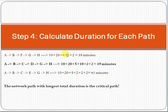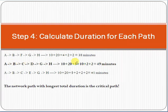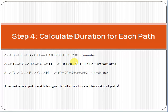Now look at these three paths and find the longest duration. You can see that 49 minutes is the highest. That means A-B-C-D-G-H is the critical path. Any activity on this path cannot be delayed — if delayed, it will delay your project timelines. Activities outside the critical path have some float, some slack, and can be delayed without delaying the project.